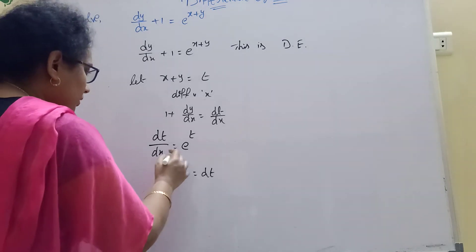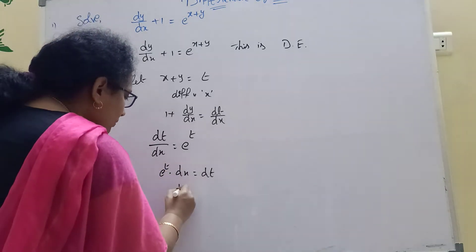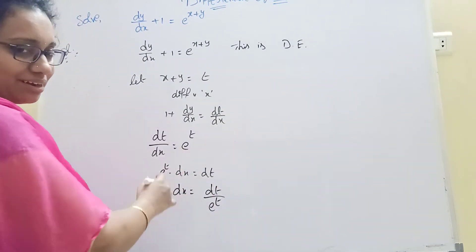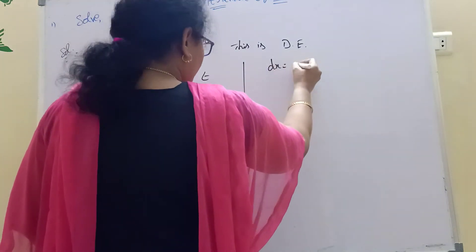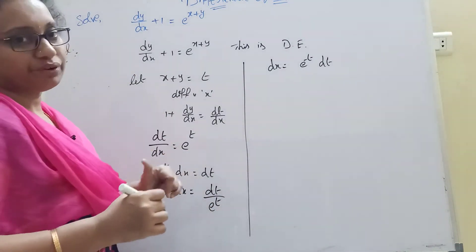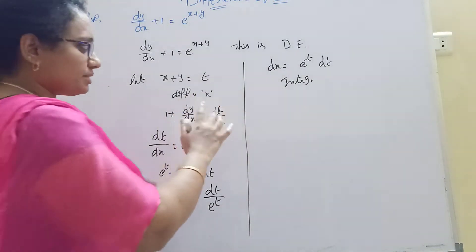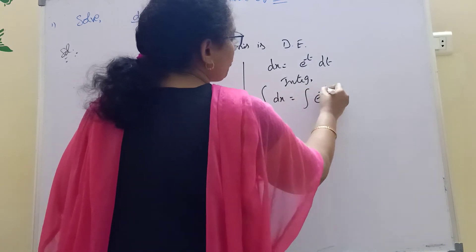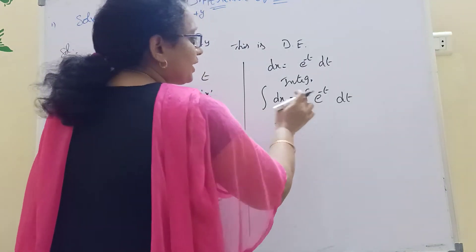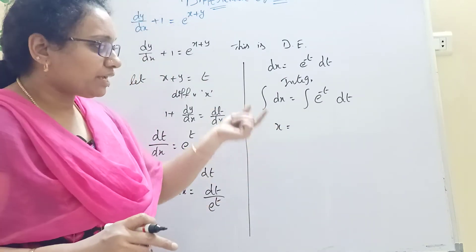Integration is applied on both sides. The integration of dx equals the integration of e^(–t) dt. Taking the integration of e^(–t), we get e^(–t) divided by minus 1, giving us e power minus t by minus 1.